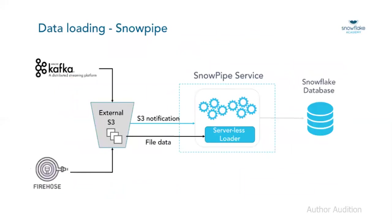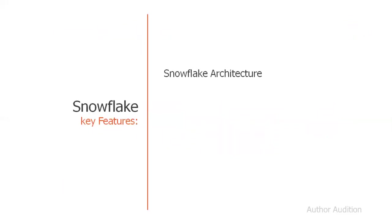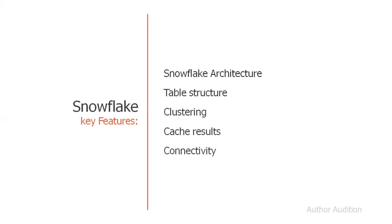Snowpipe is another advantage — it provides continuous data loading. You can create external stages on S3, Azure, or GCP, and as files arrive, this feature gets a notification and automatically loads the data to Snowflake with no manual intervention required.